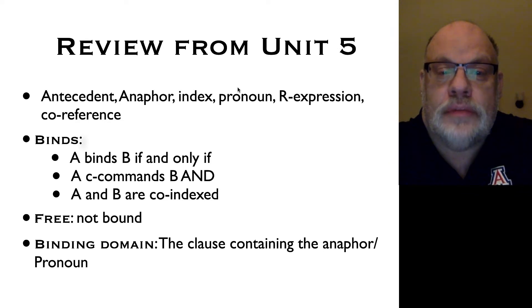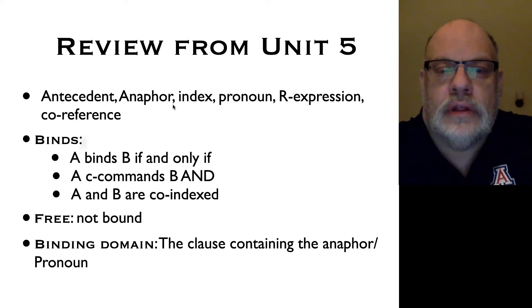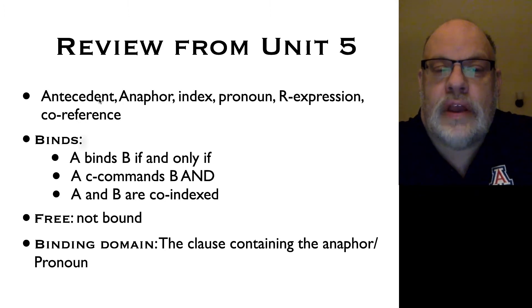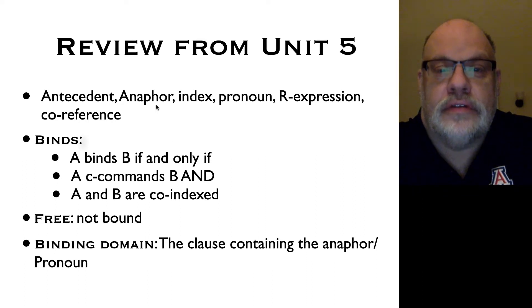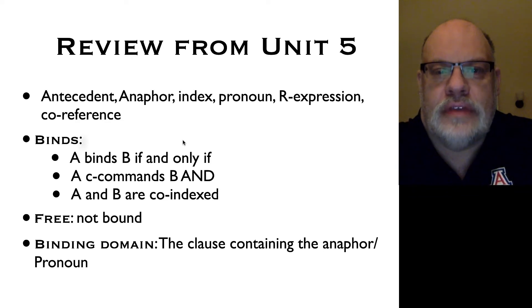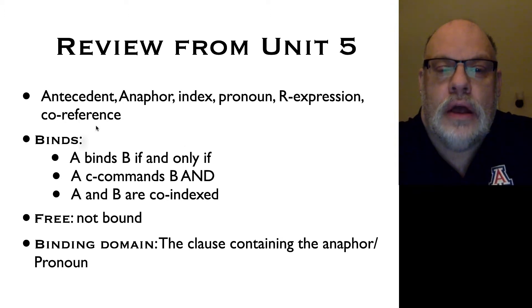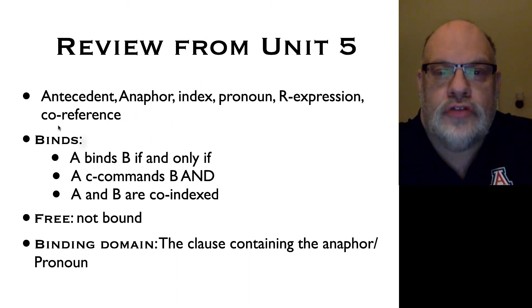We mark the relationships between anaphors, pronouns, r-expressions, and their antecedents by making use of indices — the little subscript i's and j's we put after anaphors and after antecedents. When two items share an index, we say they're co-referent. Now, co-reference in and of itself is insufficient to describe the patterns that we find among these items. Instead, we need another notion, which is essentially an extended form of C-command — a C-command where the two items in the C-command relationship are co-indexed. We call this phenomenon binding.